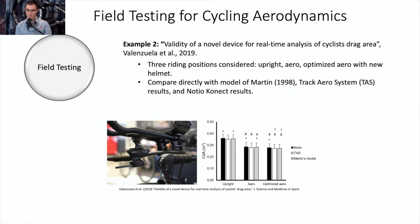The second study is the first peer-reviewed publication with an actual real aero sensor: the validity of a novel device for real-time analysis of cyclist drag area by Valenzuela in 2019, using the Notio Connect sensor. Three riding positions were considered: upright, aero, and optimized aero with a new helmet. They compared directly with Martin's 1998 mathematical model for cycling and the Garmin Track Aero System. Large variations in CDA — like changing from upright to aero — were easily detected, but small variations such as a different helmet were not distinguishable with the Notio.